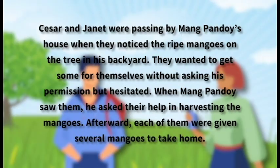Let's try if your summary and mine is similar to this. Cesar and Janet were passing by Mangpandoi's house when they noticed the ripe mangoes on the tree in his backyard. They wanted to get some for themselves without asking his permission, but hesitated. When Mangpandoi saw them, he asked their help in harvesting the mangoes. Afterward, each of them were given several mangoes to take home.